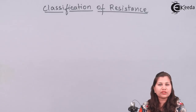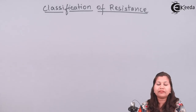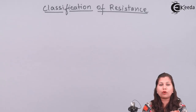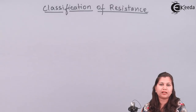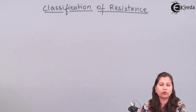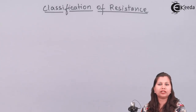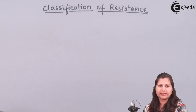When measuring resistance, its value is expressed in terms of ohms. The value of resistance can vary from a few ohms to several mega ohms — expressed in the form of ohms, kilo ohms, or mega ohms.